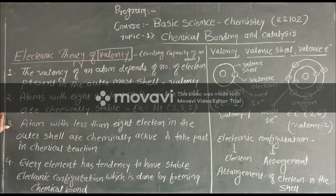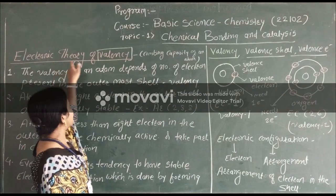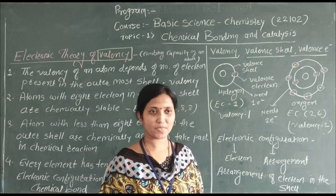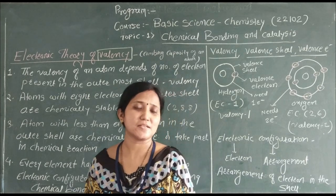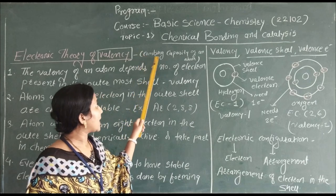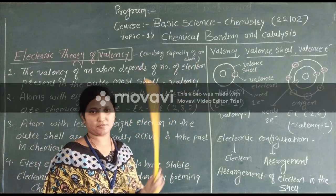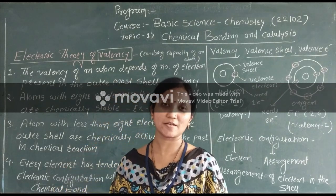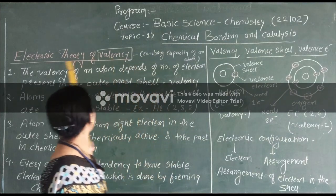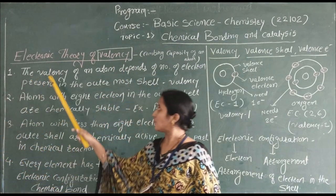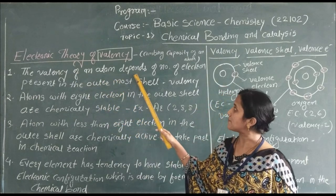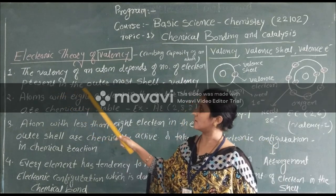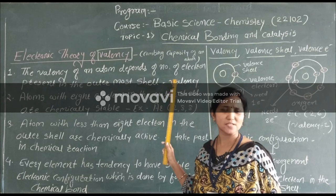The first point of this topic is the Electronic Theory of Valency. What is meant by valency? Simply, valency is the combining capacity of an atom. The valency of an atom depends on the number of electrons present in the outermost shell, which is called valency.